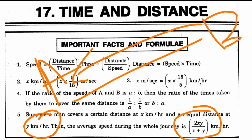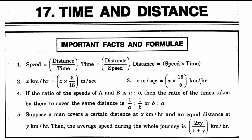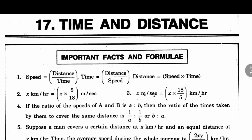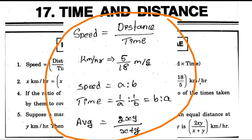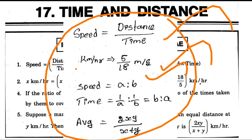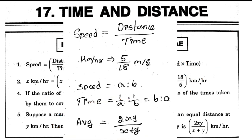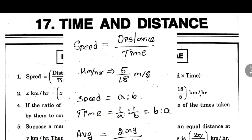This formula is used to find the average. This is the basic formula. This formula is used to find the time and distance. This method is easy to solve. Speed equals distance by time. 1 km per hour equals 5 by 18 m per second. Speed of a to b: 1 by a to 1 by b. Average speed is 2xy divided by x plus y.